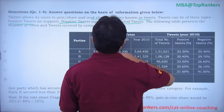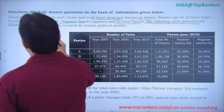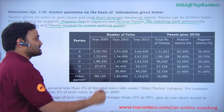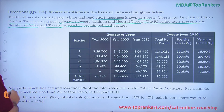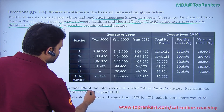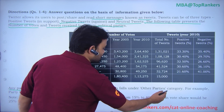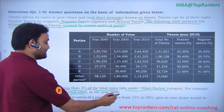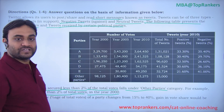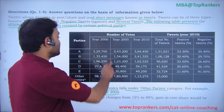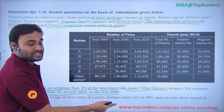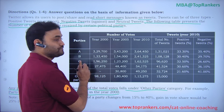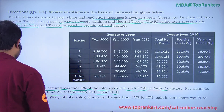This question is based on Twitter, which is now known as X. The following table presents the number of votes and tweets received by certain political parties. Any party which has secured less than two percent of the total votes falls under the 'Other Parties' category. For example, party E secured less than two percent of total votes in the year 2000, so its votes are included in the 'Other Parties' count, and the same applies for all years.